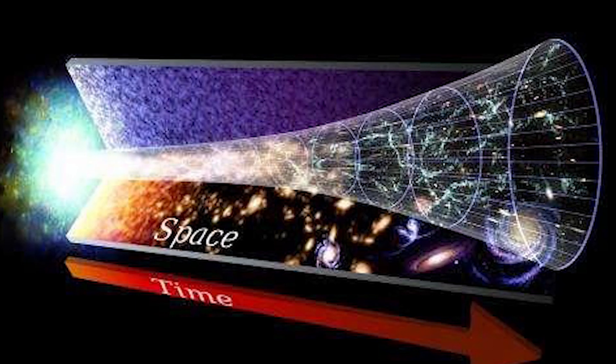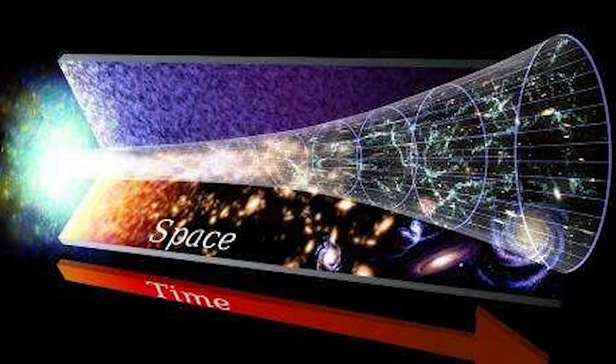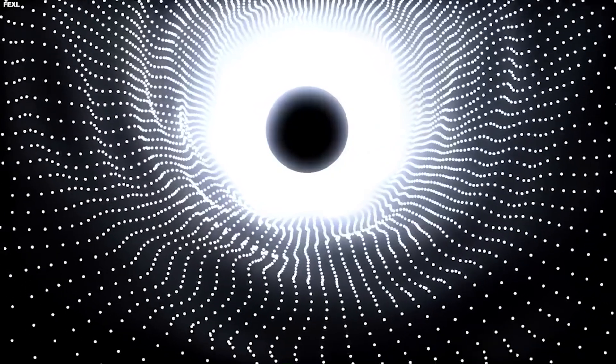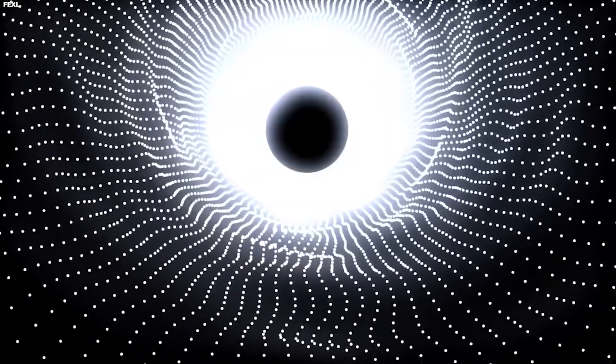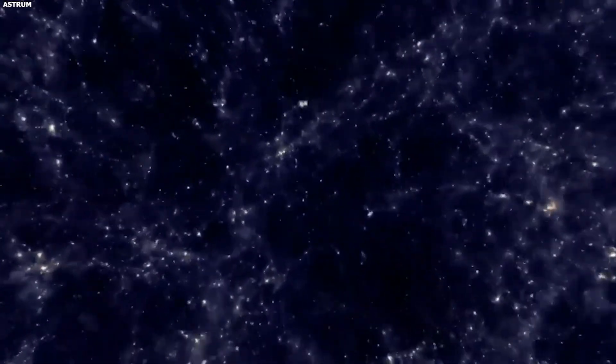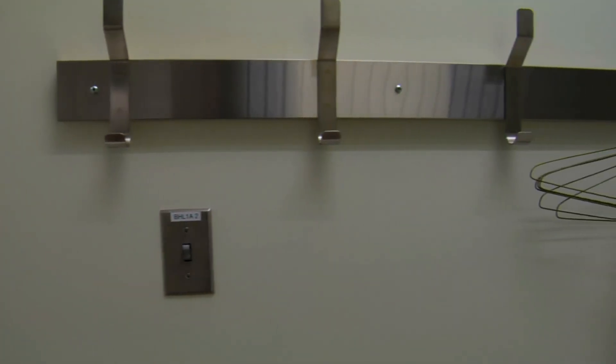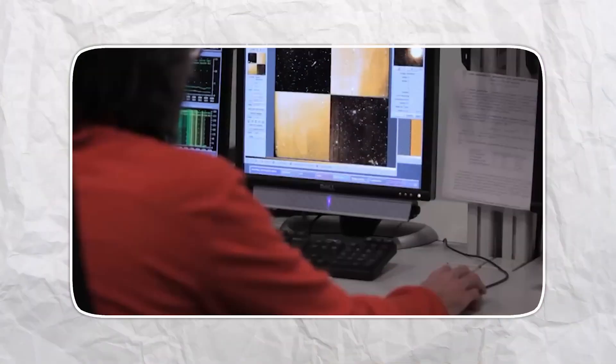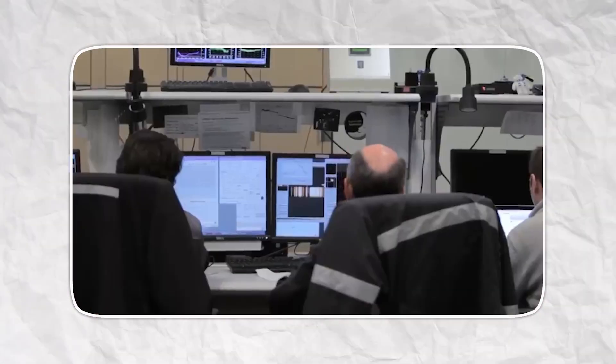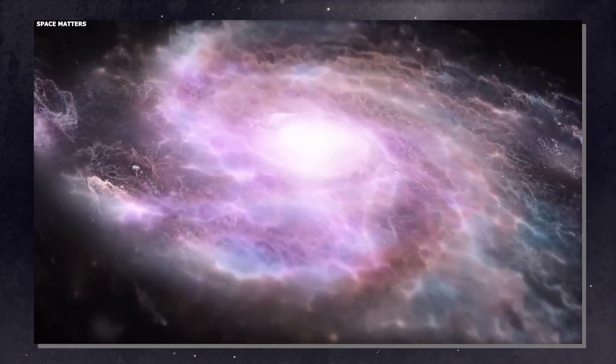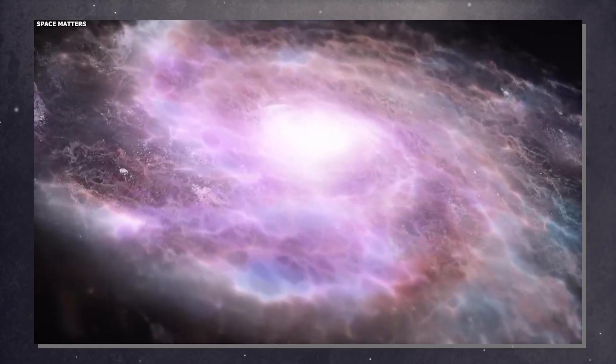And then there's the structure problem. Remember the cosmological principle, the idea that the universe should be smooth and uniform at large scales? Well, it's not. Astronomers keep finding structures that are way too big: giant walls of galaxies stretching billions of light-years, massive voids with almost nothing in them, cosmic rings and arcs that shouldn't be able to form under the laws we've established.